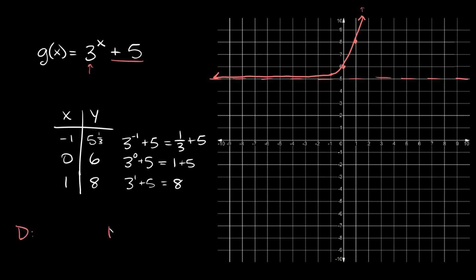Now let's talk about the domain and the range. The domain is basically going to be the same for all of these — it's always going to be all real numbers, or from negative infinity to positive infinity. For the range, that's our y values. We go all the way down to positive five and all the way up to positive infinity. So we're going to write this as five to positive infinity, using a parenthesis around five because we're not including five — we're never actually going to touch five, but we're going to get really, really close to it.